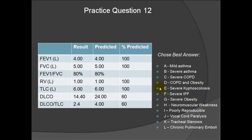Final question: No spirograms or flow volume loops are shown, just numbers, which are all normal except for the diffusion capacity, which is low and disproportionate to a normal TLC. Something is making the diffusion capacity go down in someone whose lung functions are otherwise fairly normal. We call this an isolated diffusion capacity deficit, and it is consistent with pulmonary vascular disease such as vasculitis or chronic pulmonary emboli. The best answer is L, chronic pulmonary emboli.